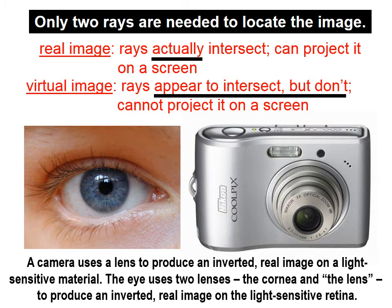Here we have a camera that uses a lens to produce an inverted real image on a light-sensitive material. The eye uses two lenses — the cornea and the lens, sometimes called the crystalline lens — to produce an inverted real image on the light-sensitive retina. It turns out that real images are always inverted.